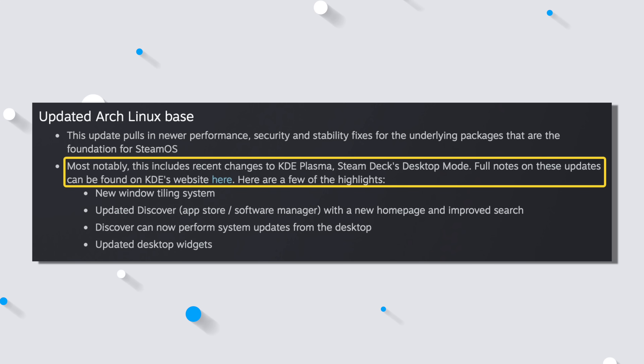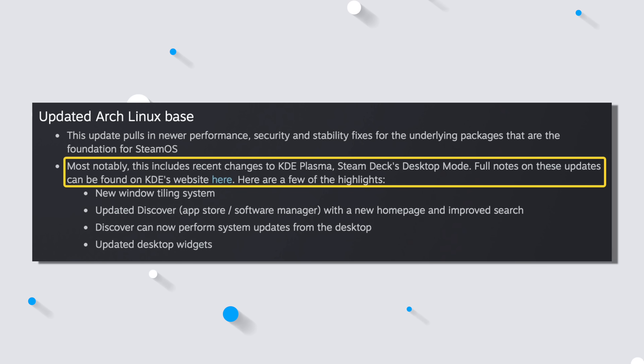And lastly, SteamOS 3.5 brings an update to the Arch Linux base, most notably including recent changes to KDE Plasma, which is the Steam Deck's desktop mode. I don't do a whole lot in desktop mode, so I'd recommend checking out channels like Gaming on Linux for that kind of information — this channel is more about what it feels like, what it plays like, and less about benchmarks. So, are you going to update to SteamOS 3.5 now that it's on the beta candidate channel, wait for beta, or wait for stable? Let me know in the comments. From the Nerd Nest, I'm Bill — stay rad, everybody.